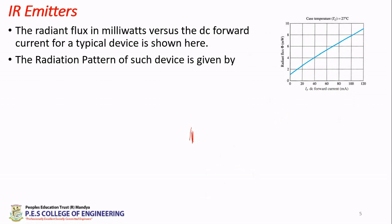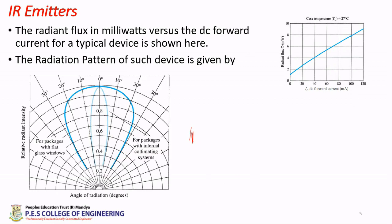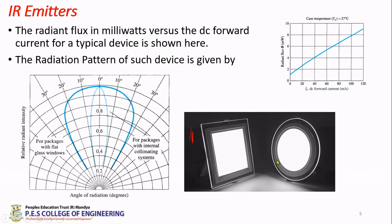The second one is how the radiation pattern looks. There are two types: radiation pattern means how photons are getting emitted. One is flat glass window, usually used in homes and lighting purposes, which has broader emission of radiation. These are the ones with broader emission, whereas the internal narrower beam you're seeing is used internally.